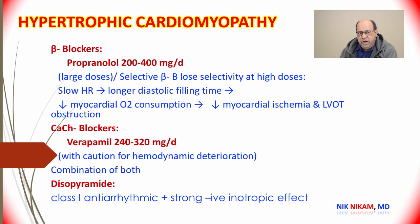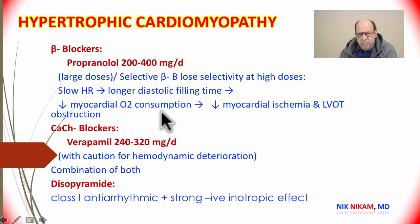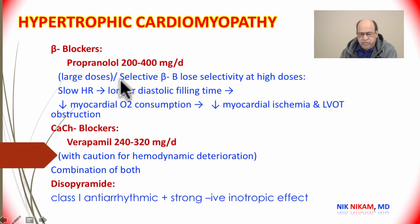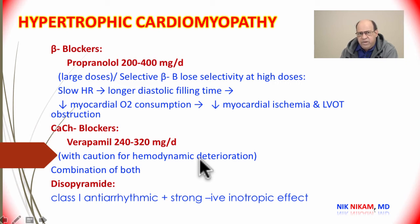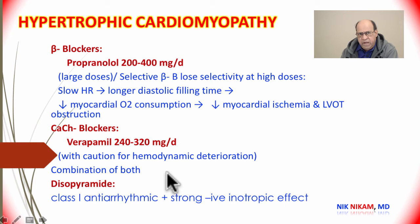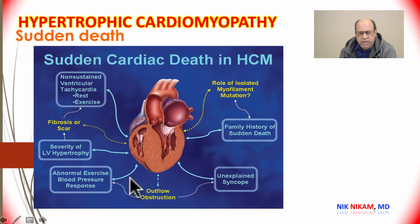The main medical treatment options include beta blockers such as propranolol or metoprolol, calcium channel blockers such as verapamil, or disopyramide. Beta blockers decrease heart rate, contractility, and myocardial oxygen requirement, thereby reducing obstruction. Verapamil similarly reduces myocardial contractility and oxygen requirement and decreases heart rate. Disopyramide, also a negative inotropic agent, helps to a certain degree as well.